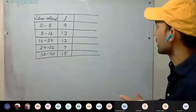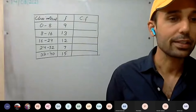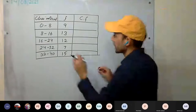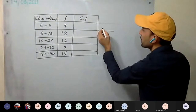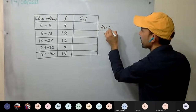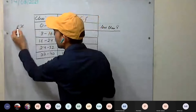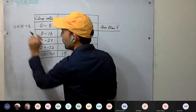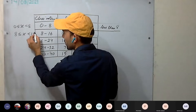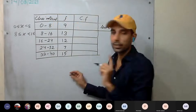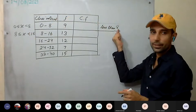Now we draw the cumulative frequency. Cumulative means we are taking the sum of the frequencies. In the first row, less than 8 — the upper limit is excluded in exclusive form, so all students who scored less than 8 are 9. That is the cumulative frequency for the first class.